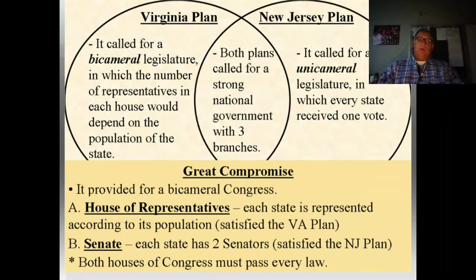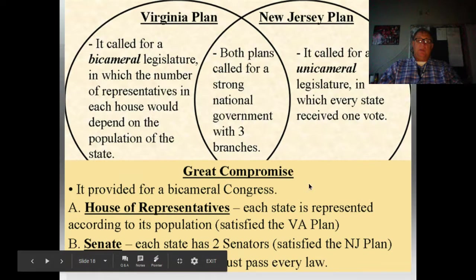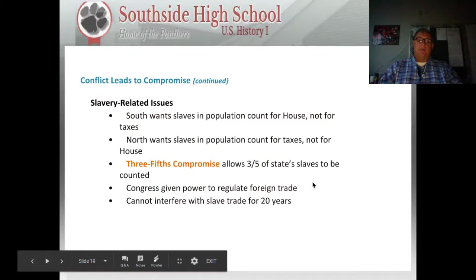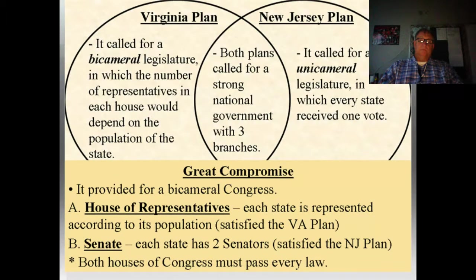Here's a pretty good Venn diagram of the Virginia Plan and the New Jersey Plan. These lecture notes can be found at coachvice.com. The Virginia Plan called for a bicameral legislature with both houses based on population. The New Jersey Plan called for a unicameral legislature in which every state received one vote. Both plans called for a strong national government with three branches. The Great Compromise provided for a bicameral Congress where representation was based on population in the House and on equal votes per state in the Senate.